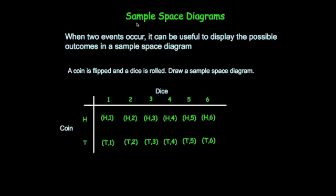In today's lesson we're going to be looking at sample space diagrams. When two events occur it can be very useful to display the possible outcomes in a sample space diagram. So here's a typical example. A dice is rolled and a coin is flipped and it says draw a sample space diagram to represent the results. This represents all the possible outcomes.